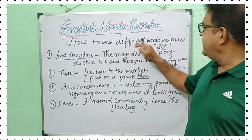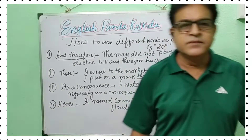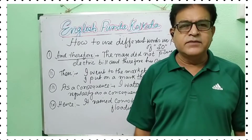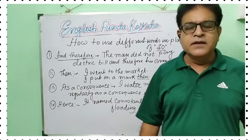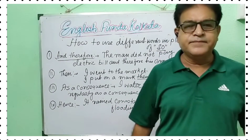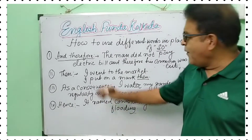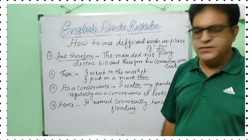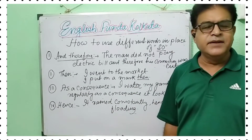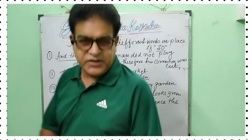How to use different words in place of 'so'? We can use the words 'and therefore', 'then', 'as a consequence', and 'hence' instead of 'so'. Let us come for the discussion.